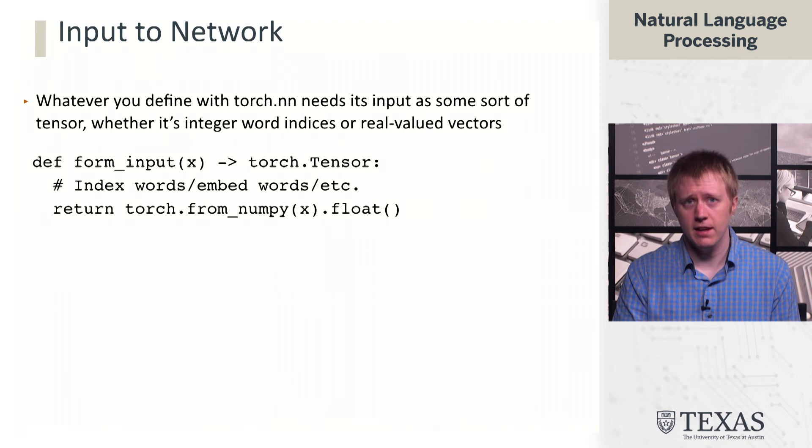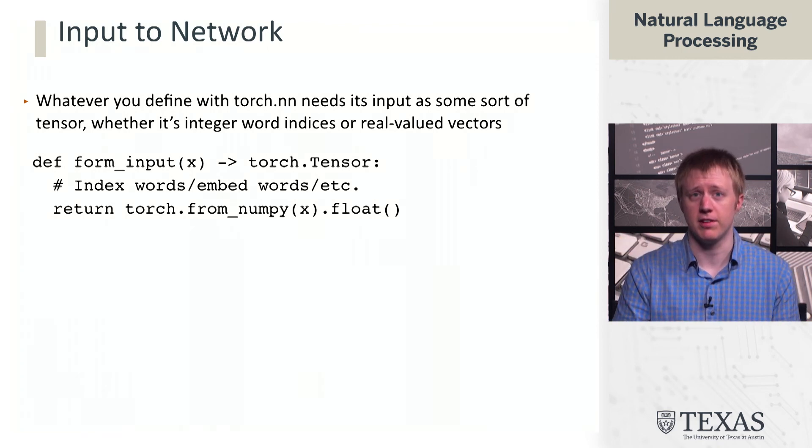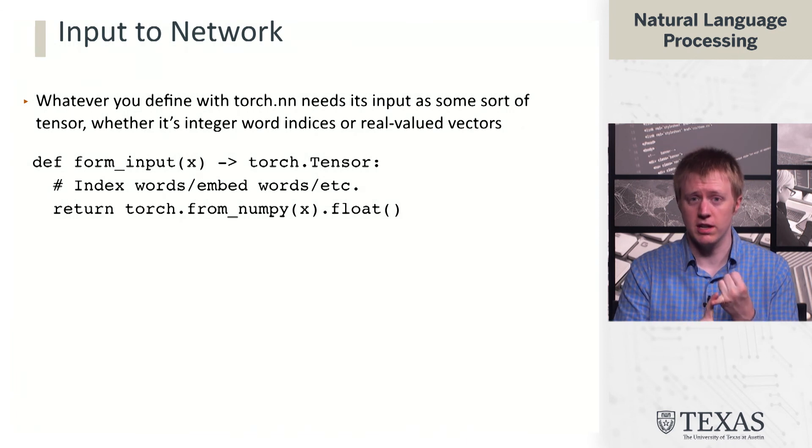The input to the network is something that we have to massage typically. We've talked about how we always need to go from raw text into a feature representation. As part of that process when you're using PyTorch, you additionally need to convert things into some kind of tensor. Whether this is turning things into integer word indices, which can then get embedded using various word embedding layers, or whether you're using real valued vectors, basically you need to convert things into a format that Torch can understand.